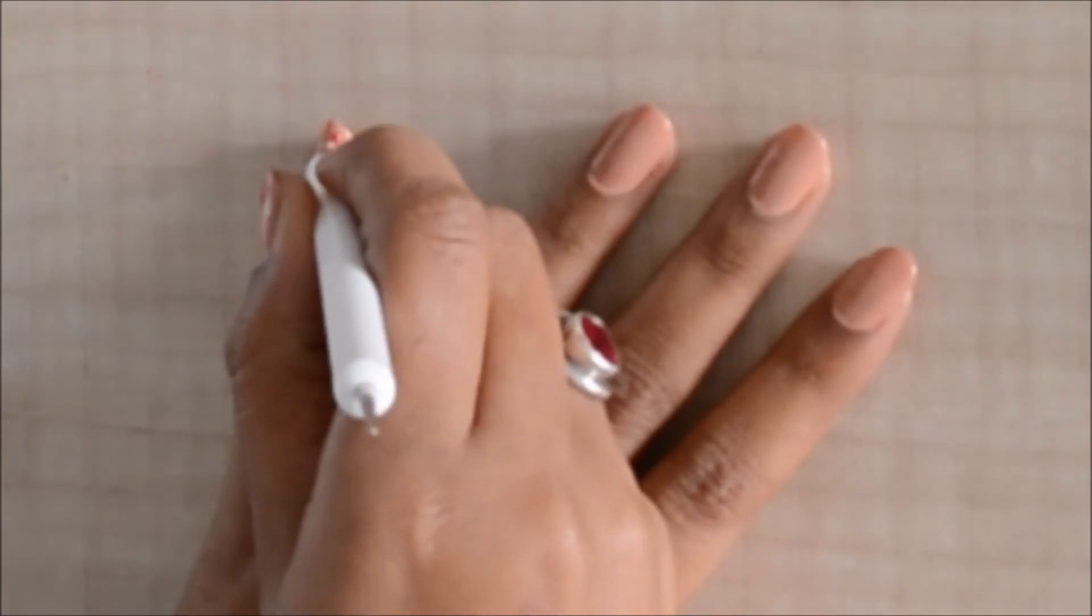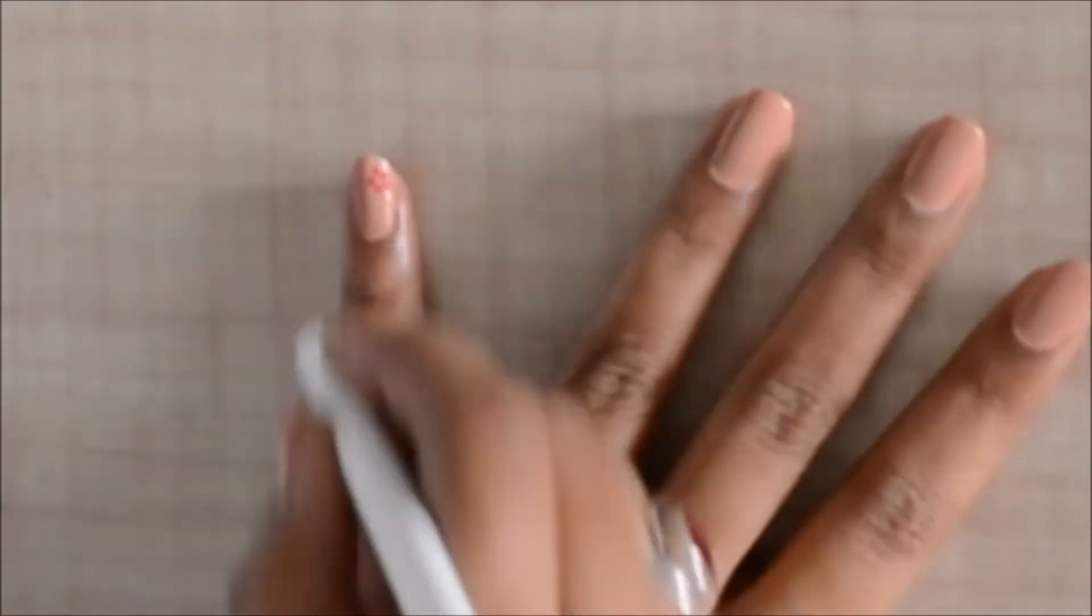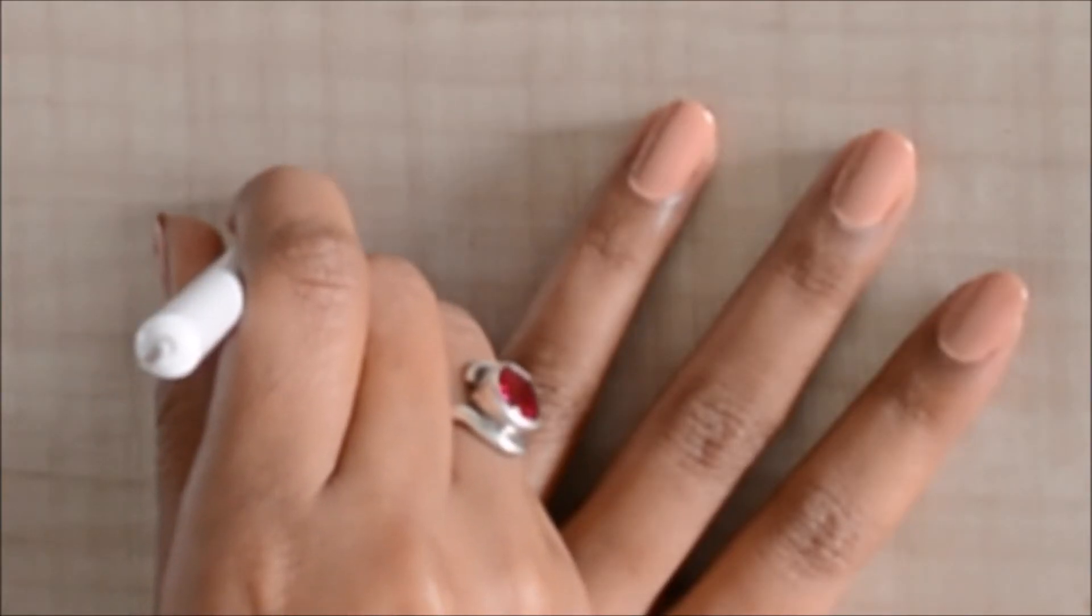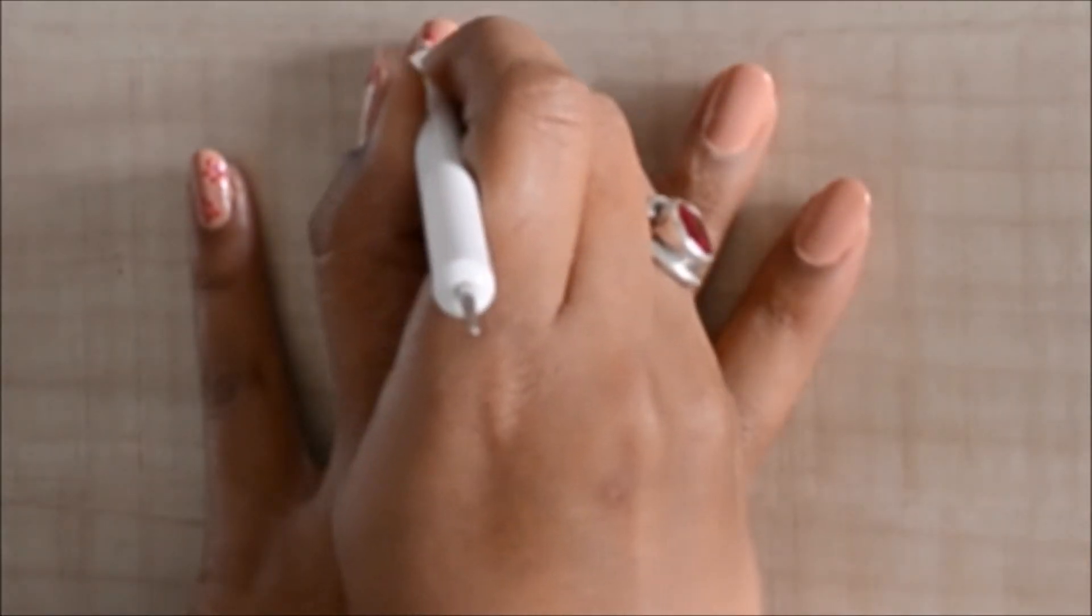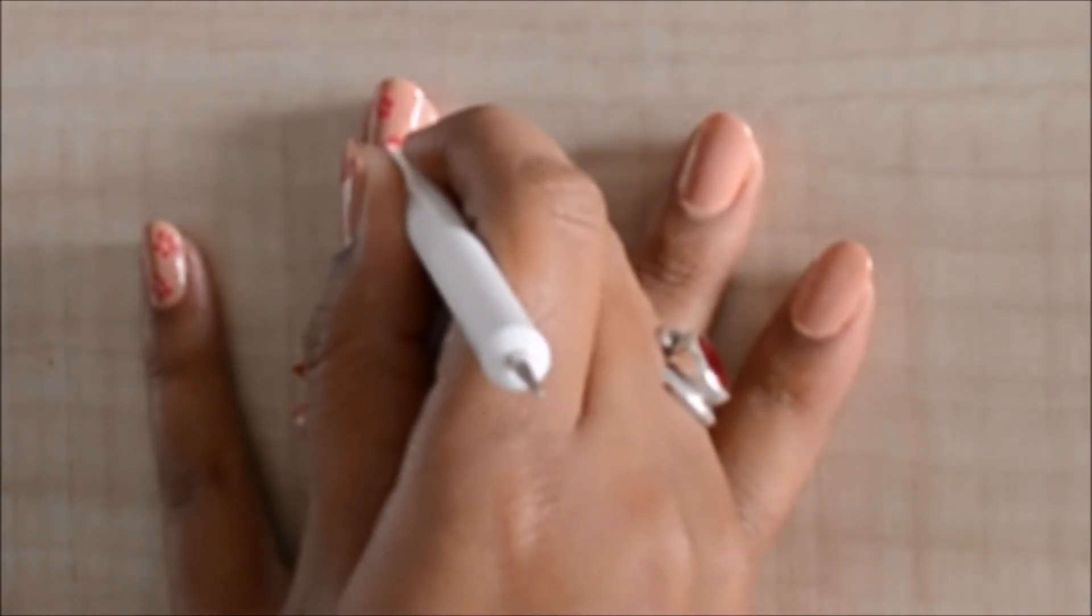The nail art is really simple. I'm going to dip the dotting tool into the nail paint and make five dots connecting them to each other till they look like a flower. I'm going to keep on repeating this step till I have covered all my nails.